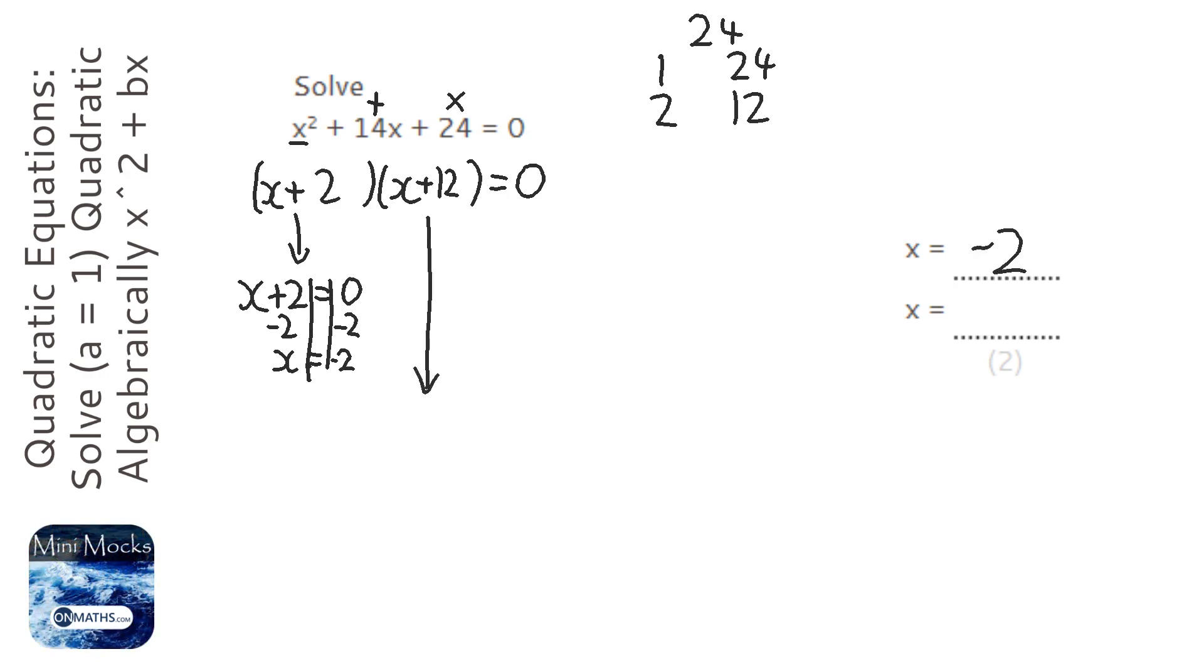And we're going to get the right-hand side equal to 0. So we're going to take away 12 both sides, so x equals minus 12. So our two solutions are minus 2 and minus 12.